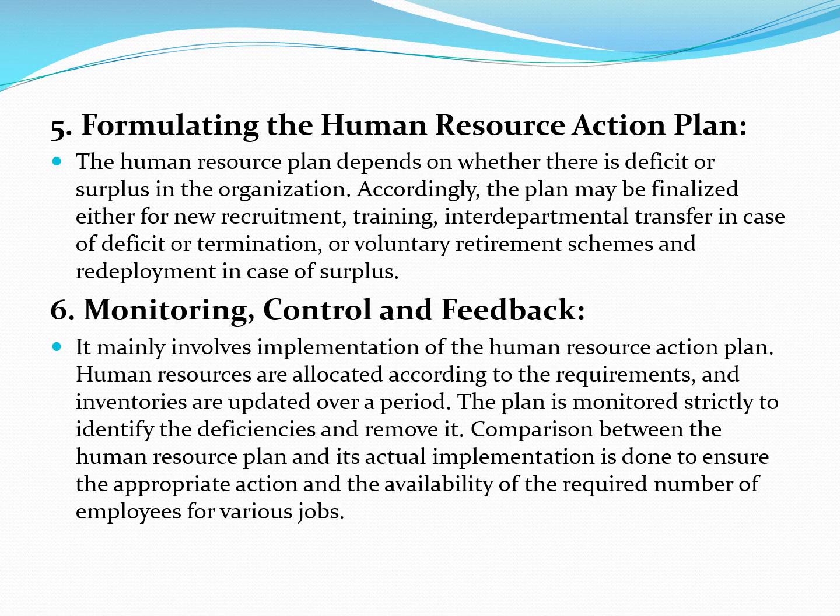The last step is monitoring, control, and feedback. After performing the action plan and all steps, we check what results we got. It will be continuously analyzed, and deviations will be identified and removed. After removing deviations, feedback will be taken again. Basically, there will be a comparison between actual performance and the standard performance set in the plan, and if deviations exist, proper corrective action will be taken. The HRP planning process ensures the right number of employees are in the organization at the right time so that organizational goals are achieved.